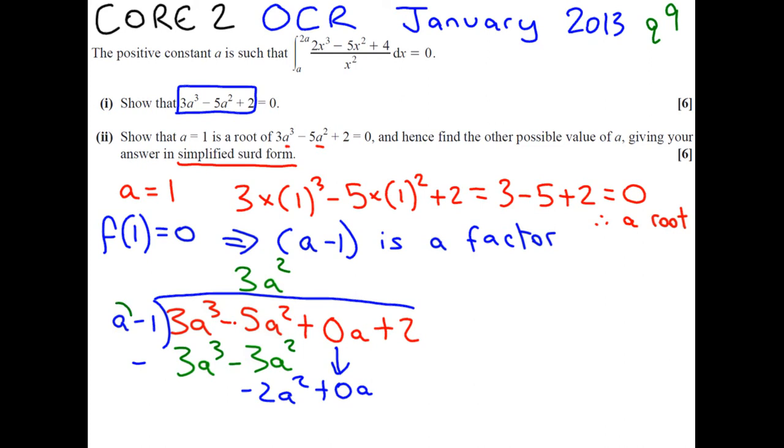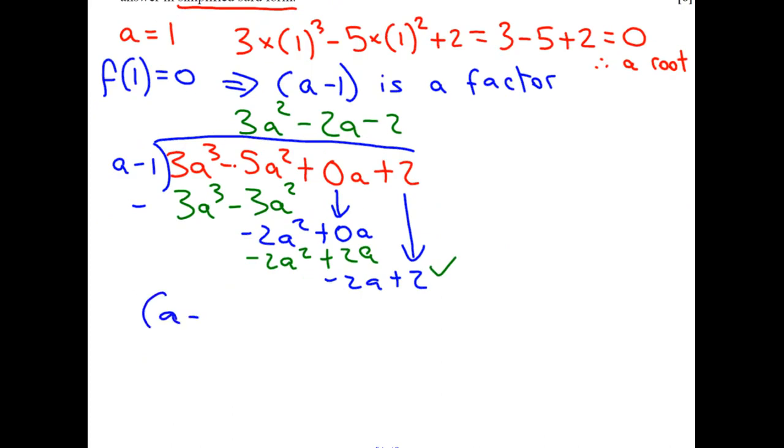So, we're thinking, what do we have to times A by to get minus 2A squared? And, of course, the answer is minus 2A. So, then we actually multiply this through by minus 2A, and we get minus 2A squared plus 2A. When we subtract here, we get minus 2A, and we bring down our 2, and so we get that we want to multiply by minus 2, which would give us our answer. So, that means that if we were to factorize, we would have A minus 1, and 3A squared minus 2A minus 2 equals 0.